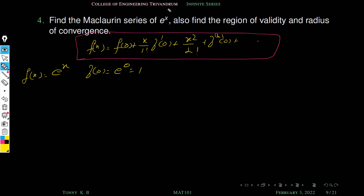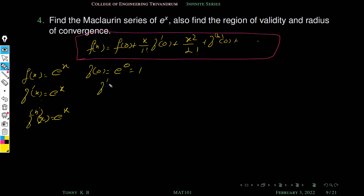Here f of x is given as e^x. So what is f of 0? That is e^0, which is equal to 1. We know that f dash of x is also e^x, and so on — in general, the n-th derivative of e^x is also e^x. So all the derivatives at 0 are 1. Therefore f dash of 0 equal to 1, and so on for all derivatives.